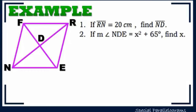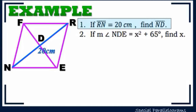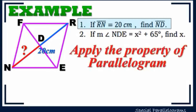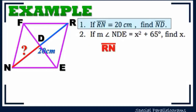Now let's apply this. If line segment RN equals 20 centimeters, find line segment ND. We have RN = 20 cm and need to find ND. Applying the property of parallelograms, line segment RN equals line segment ND plus line segment DR. Adding ND and DR gives us RN.